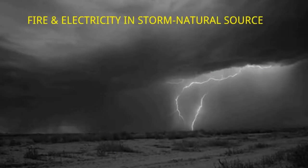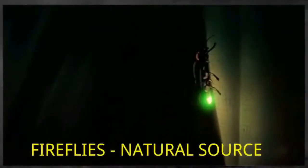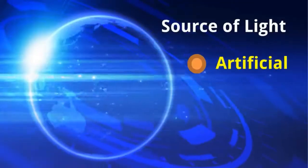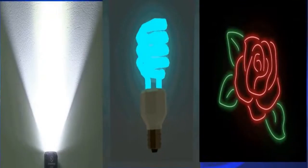Human beings cannot produce this light. Light in the fireflies is also natural light. Artificial light: there are so many varieties of artificial light available in the world, like torch, CFL, neon. There are so many varieties.